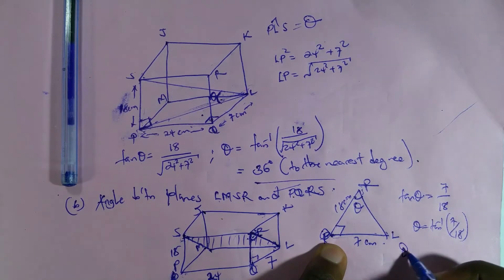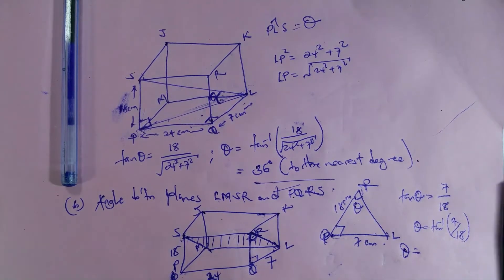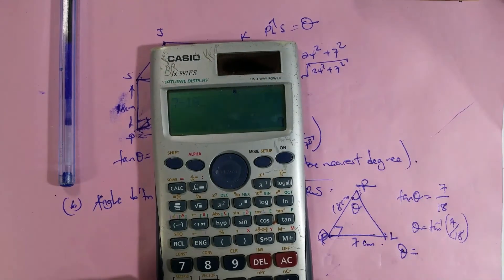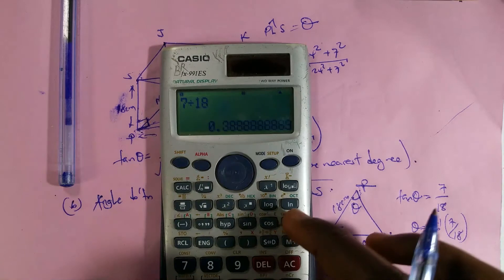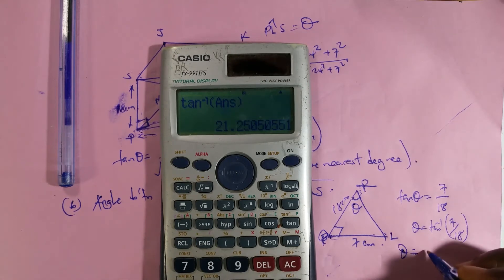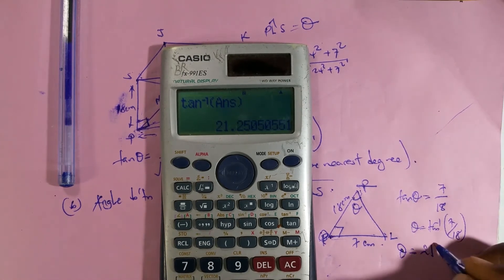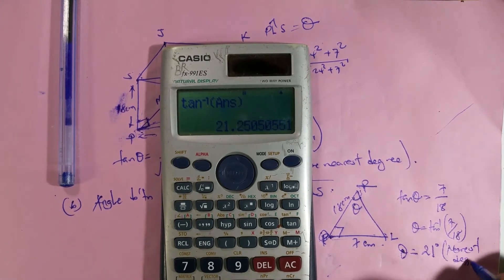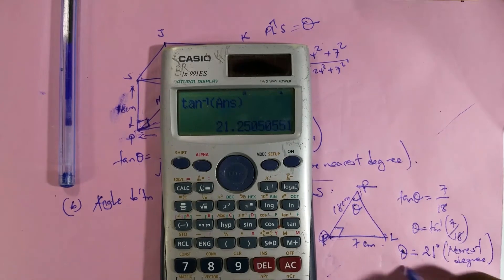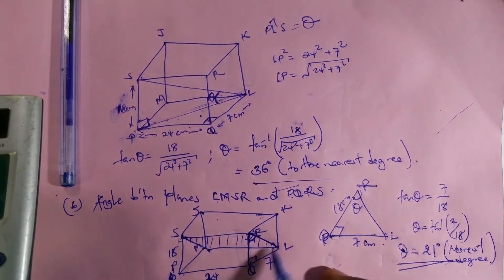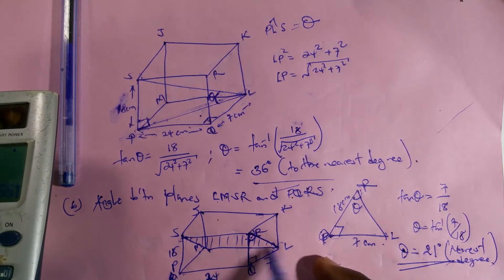Theta equals arctan of 7 divided by 18. Calculating: 7 divided by 18 gives us approximately 0.3889, and arctan of that gives 21.25 degrees, which rounds to 21 degrees to the nearest degree. That is the angle between planes PQRS and LMSR.